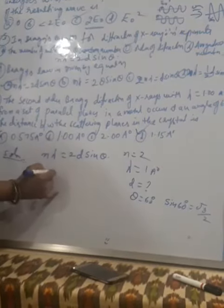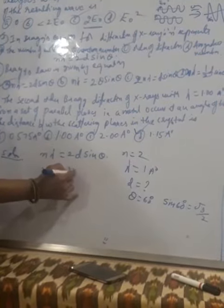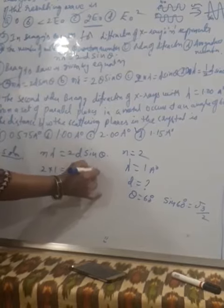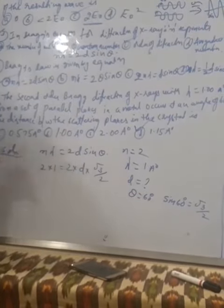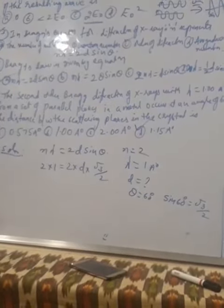N 2, 2 into 1 is equal to 2 into D into root 3 by 2. Okay, from this...